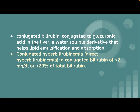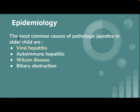Conjugated bilirubin is conjugated to glucuronic acid in the liver, forming a water-soluble derivative that helps with lipid emulsification and absorption. Conjugated hyperbilirubinemia, or direct hyperbilirubinemia, is defined as conjugated bilirubin more than two milligrams per deciliter or more than 20% of total bilirubin.